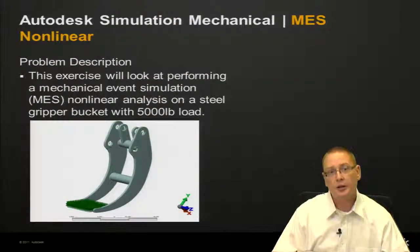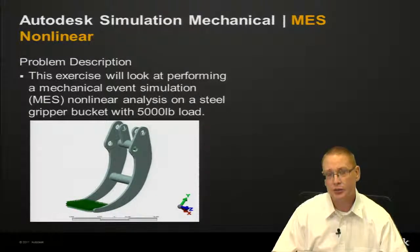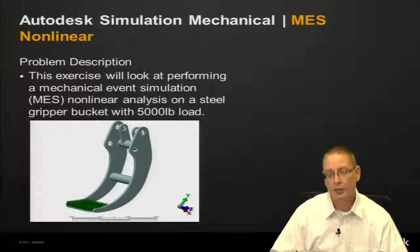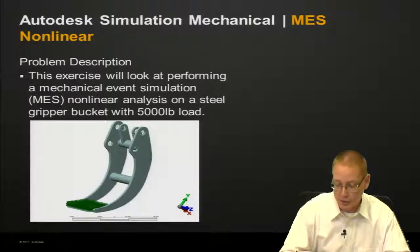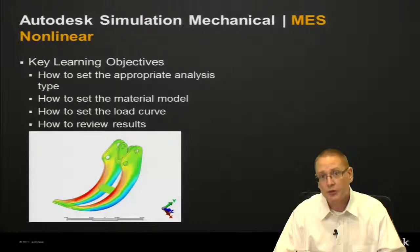For our first slide here, we're going to give you some problem description. The exercise that we're going to do is going to look at performing a mechanical event simulation non-linear analysis on a steel gripper bucket with a 5,000 pound load on it. Since our topic is permanent deformation, that would indicate that we need to utilize a mechanical event simulation analysis with the non-linear material model so that we can capture that permanent deformation.